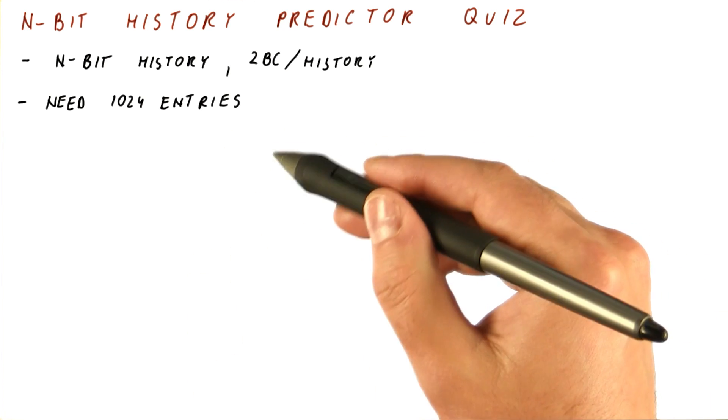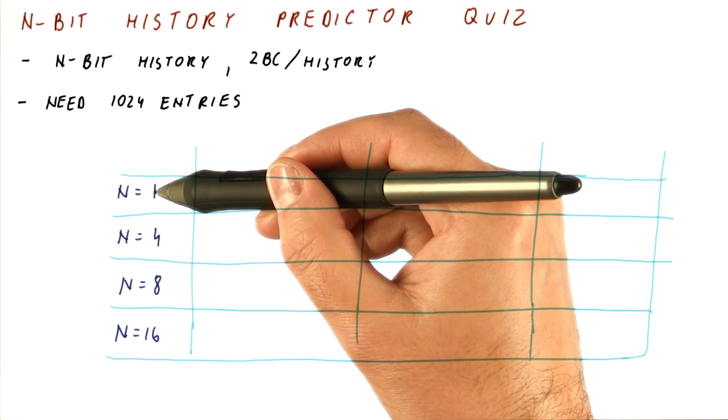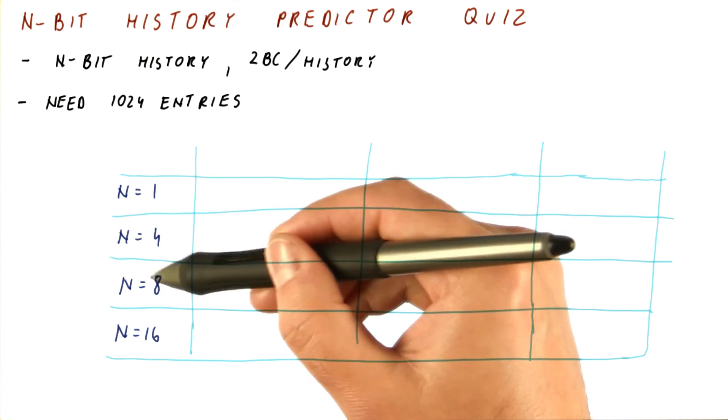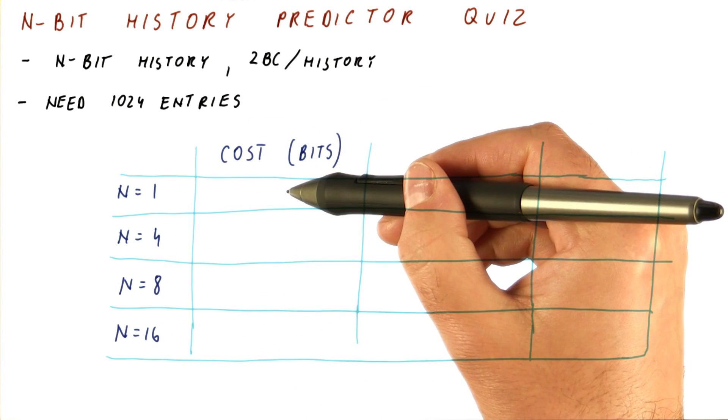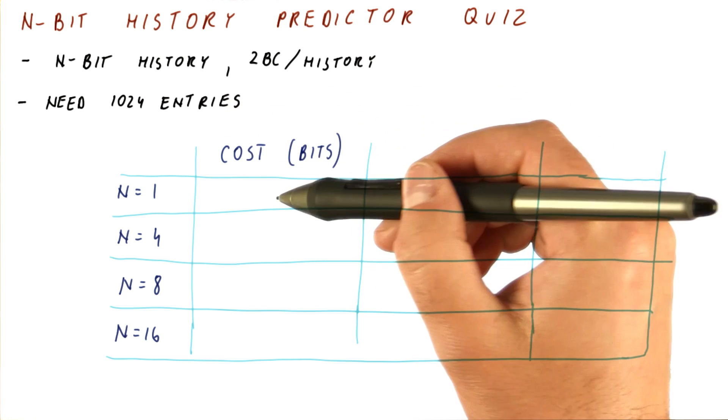So for the length of the history of 1, 4, 8, and 16, what is the cost of the entire predictor in bits?